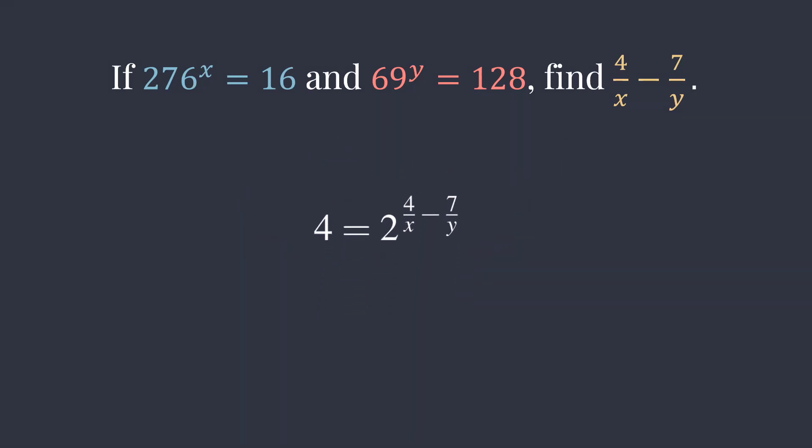And now, what is 4 over x minus 7 over y equal to? It's equal to 2 because 2 squared is 4. That's our final answer. We found it without figuring out x and y.